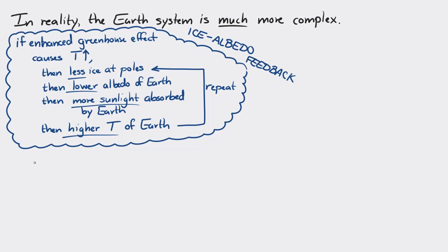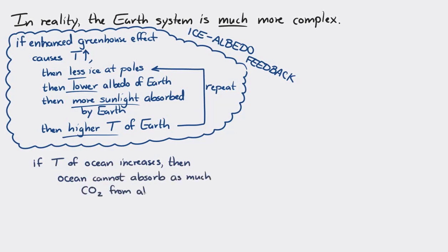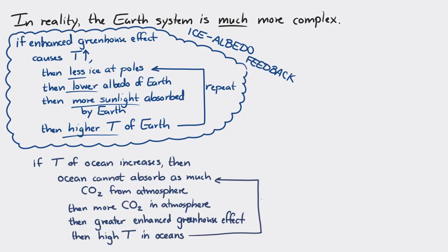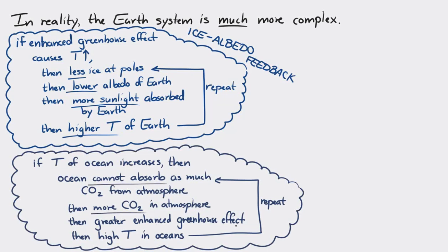Also, if ocean temperatures increase, oceans — due to their chemistry — cannot absorb as much carbon dioxide from the atmosphere. If the oceans are absorbing less CO₂, more remains in the atmosphere, causing a greater enhanced greenhouse effect, which in turn raises ocean temperatures further, which means the oceans absorb even less CO₂, leaving more in the atmosphere, causing a greater greenhouse effect and higher temperatures. Again, a feedback loop.